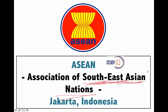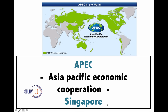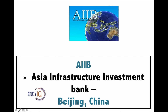Next is ASEAN — the Association of Southeast Asian Nations — comprising countries like Singapore, Malaysia, Indonesia, etc. Its headquarter is in Jakarta, the capital of Indonesia. Next is APEC — Asia-Pacific Economic Cooperation. Its headquarter is in Singapore.